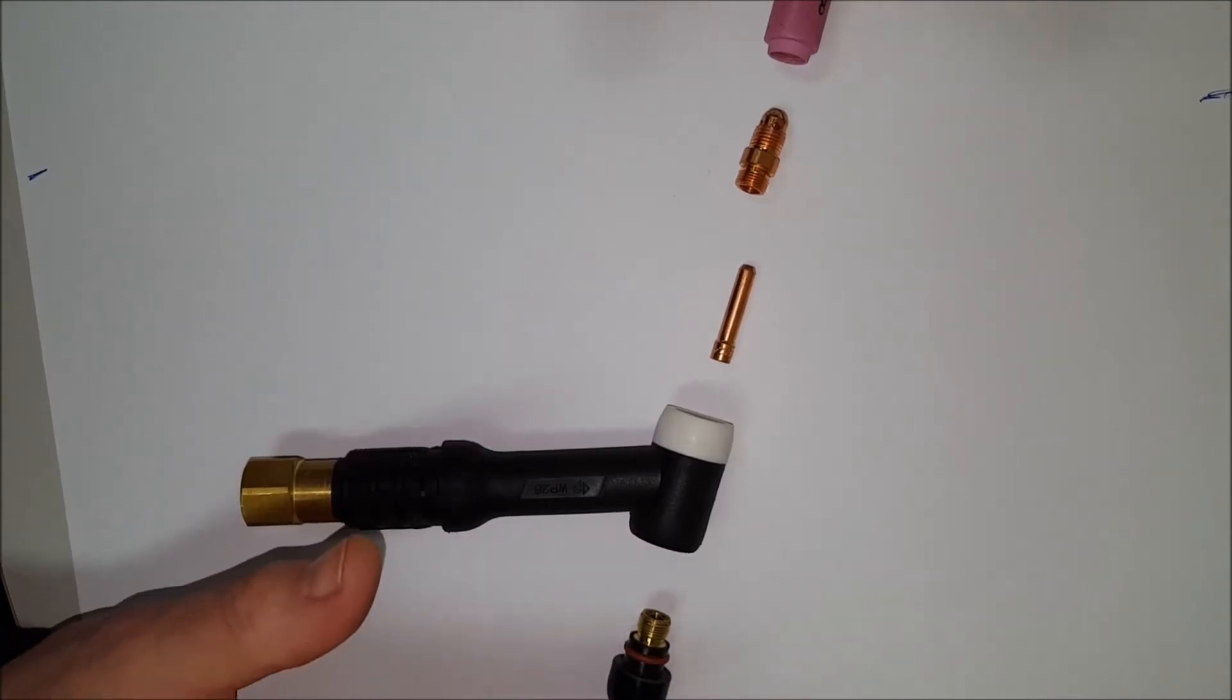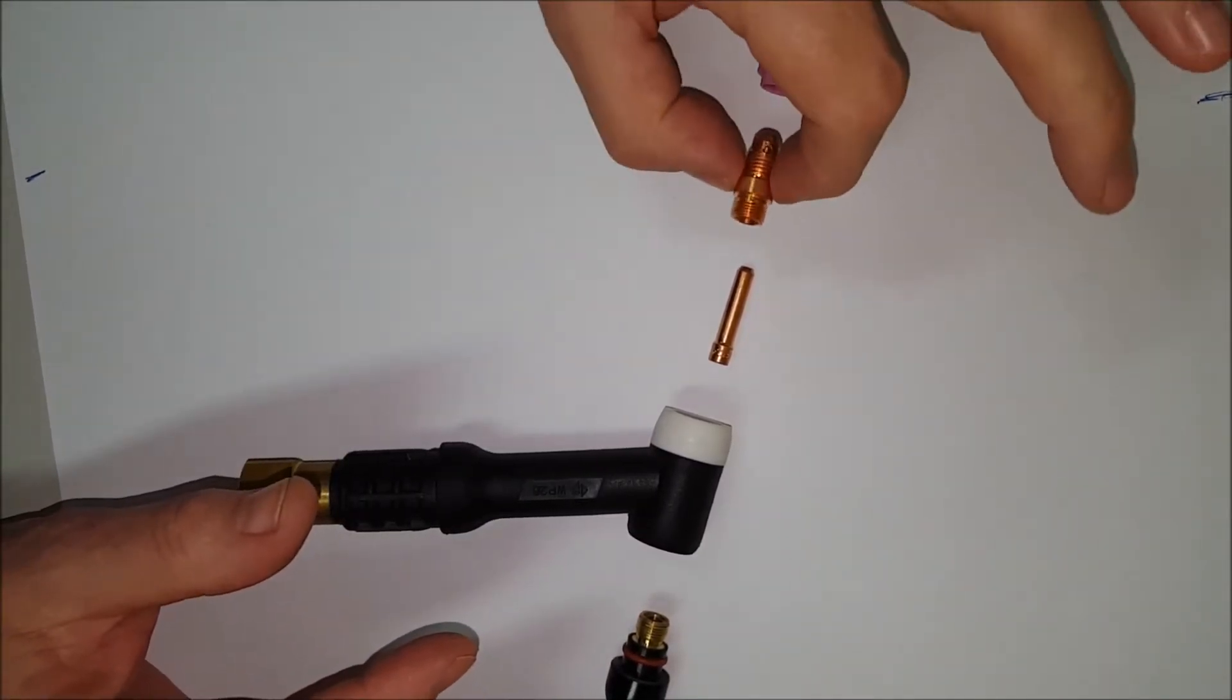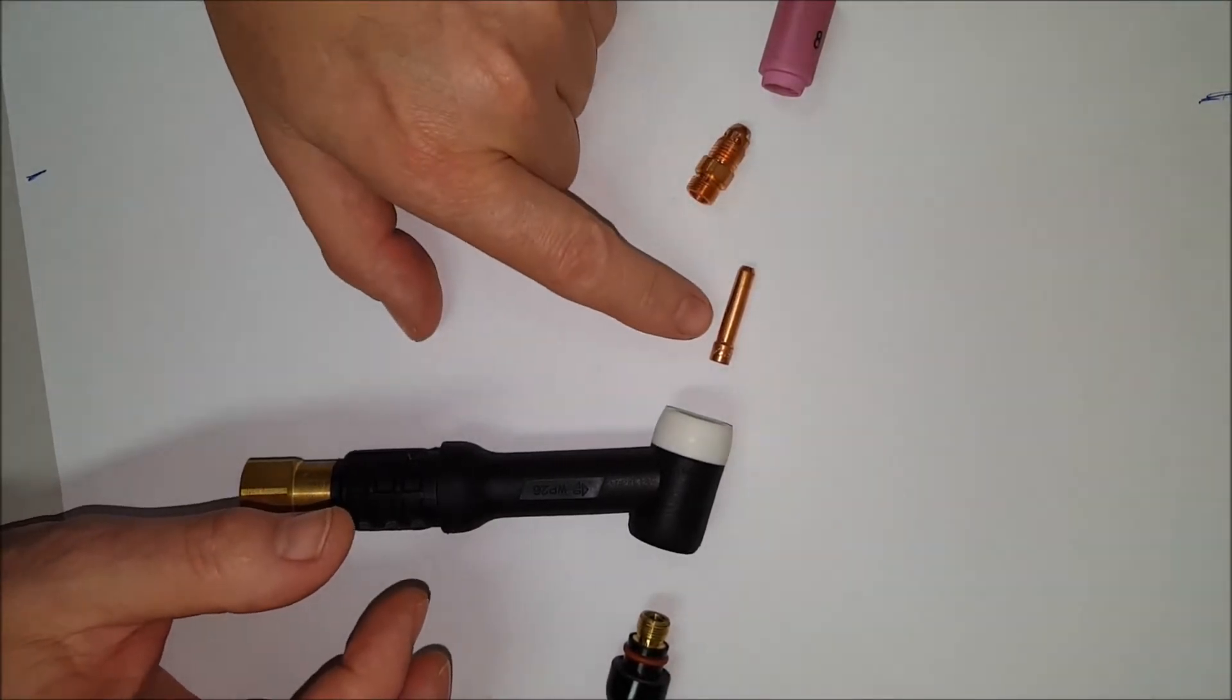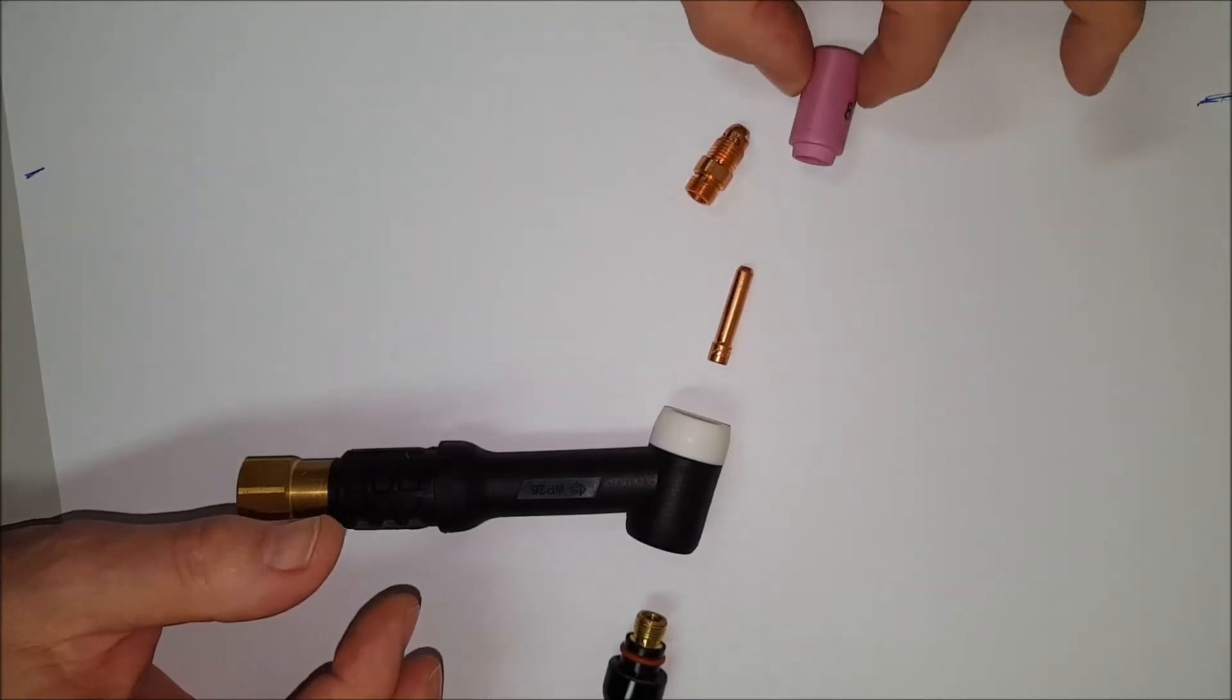We're going to look at how to put the torch together. In this case, we've got a stubby, so it's a short bodied collet body with a stubby collet and stubby ceramic.